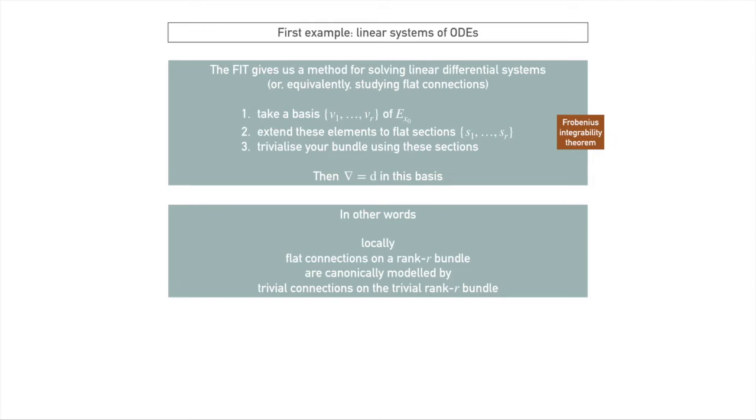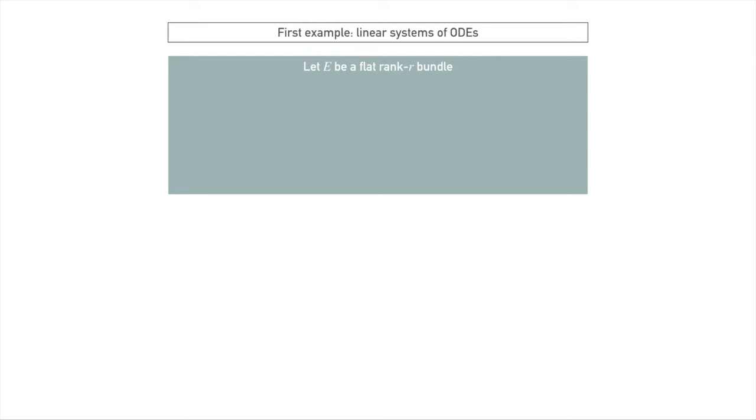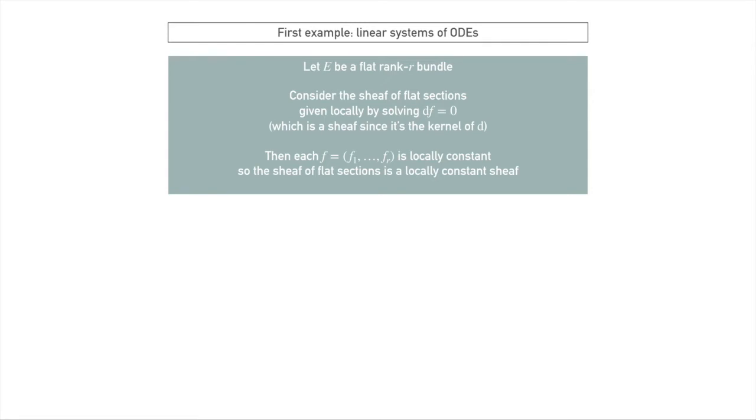So let's talk now, finally, about something a bit more topological. If we take some flat rank r bundle, so that means some bundle that admits a connection with zero curvature, we can define a sheaf. We can consider the sheaf of flat sections, and this sheaf is given by solving d of f equals zero. And you can note this is a sheaf because it's the kernel of a sheaf morphism. We just say over each u, it's given by solving d of f equals zero. And each solution to this will be locally constant because its derivative is zero. So the sheaf of flat sections is a locally constant sheaf.